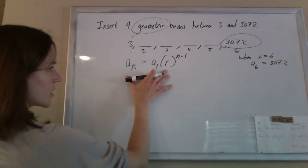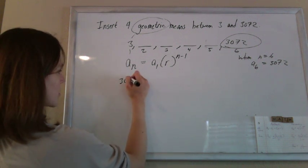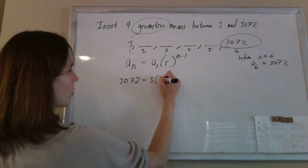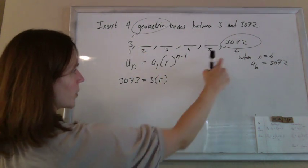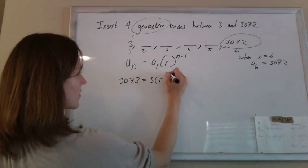So just plug that in and see if we can solve. So the value of this term is 3072. When the first term is 3, we don't know the r, but we do know in this case that n is 6. So 6 minus 1 is 5.